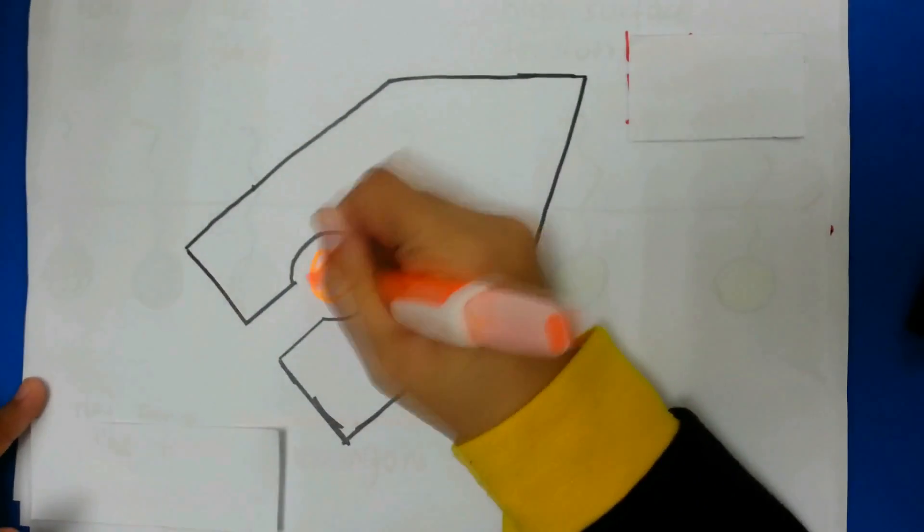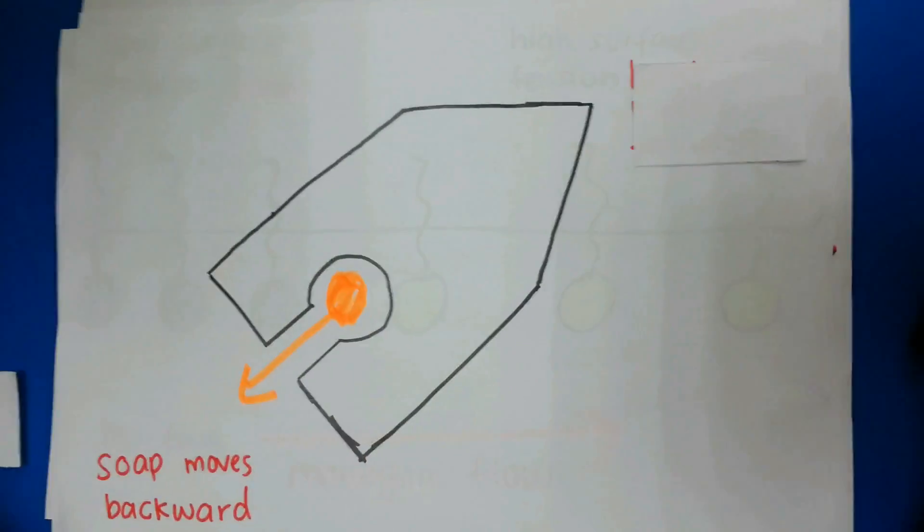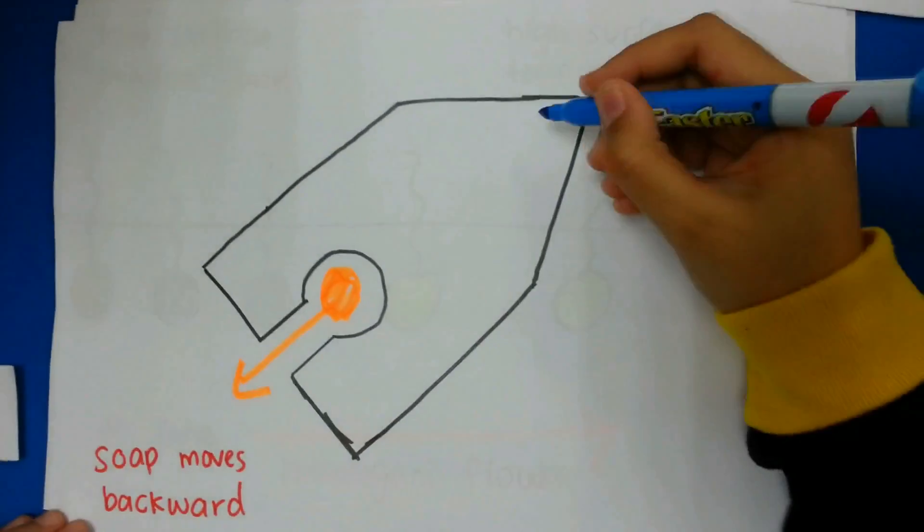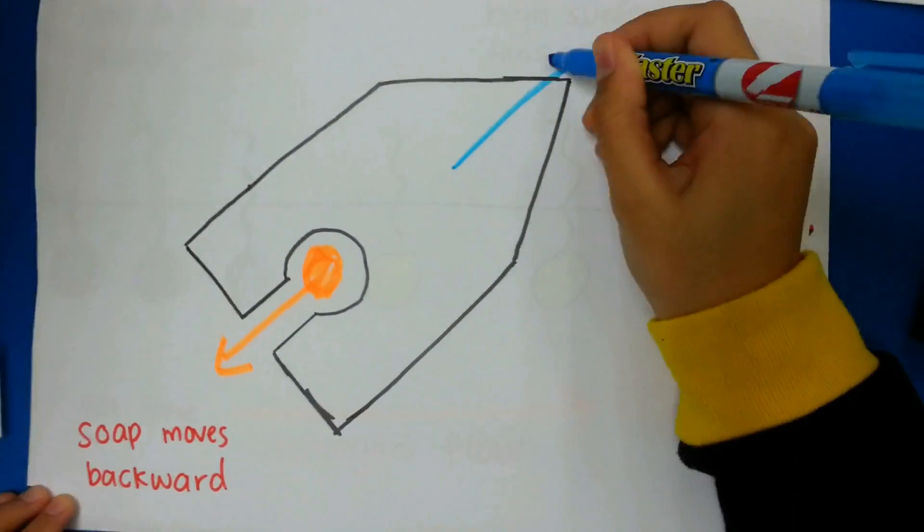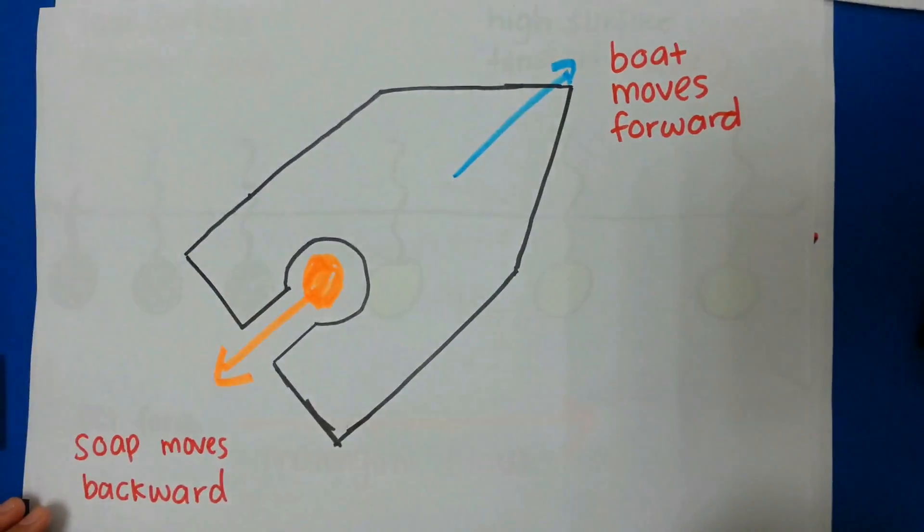We have learned before that the Meringoni effect states that the fluid will flow from the soap region towards the water region. Soap being forced out the back of the boat is caused by the force created by liquids of two different surface tensions. The liquid being forced out the back of the boat is what pulls it forward.